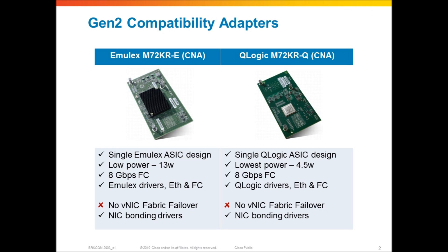Here we have the CNAs from Emulex and Q-Logic — these are the Gen 2 versions. In Gen 1, the main difference was that there were several different chips on the adapter: a traditional Fiber Channel ASIC, a traditional Ethernet ASIC, and another ASIC provided by Cisco called Menlo that acted as the muxing bridge to bring both Fiber Channel and Ethernet together into a data center Ethernet uplink. With the Gen 2 versions, each company has integrated all of that functionality into their own single chip, providing a lower power footprint, more optimized form factor, and less heating and power. So it's a single ASIC design in both cases.